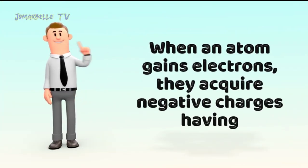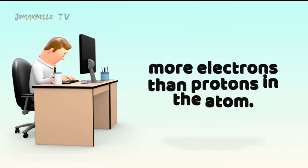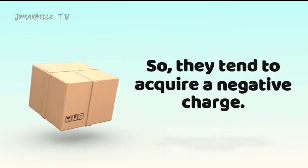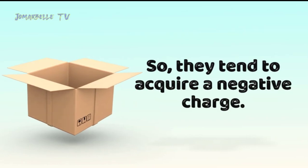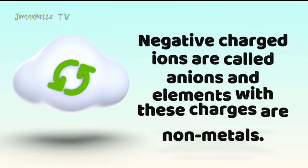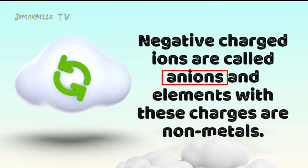When an atom gains electrons, they acquire negative charges, having more electrons than protons in the atom. So they tend to acquire a negative charge. Negative charge ions are called anions and elements with these charges are non-metals.